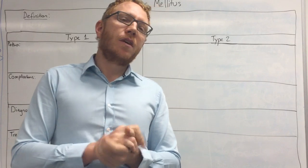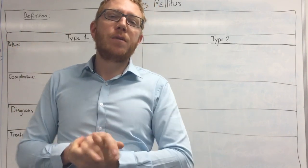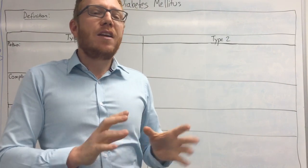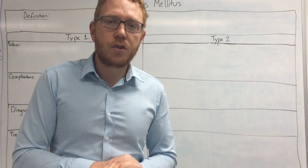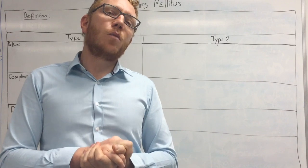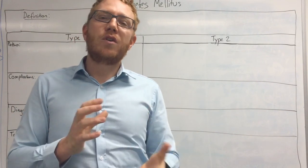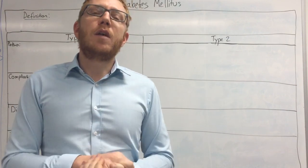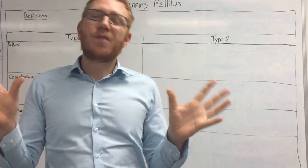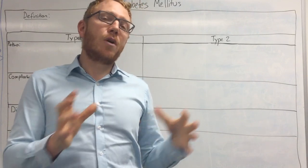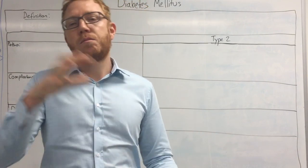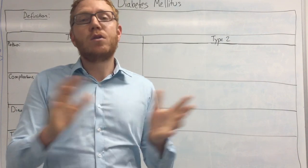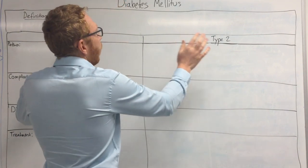Today we're not going to focus on insipidus, which is more of an ADH problem where insufficiency of that hormone leads to high urine output. We're also not going to focus on gestational diabetes, where placental hormones cause a degree of insulin desensitisation in the mother, increasing blood sugar and exposing the baby to high sugar levels affecting growth. Today is purely about type 1 and type 2.